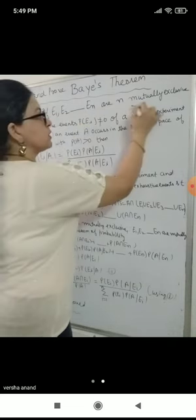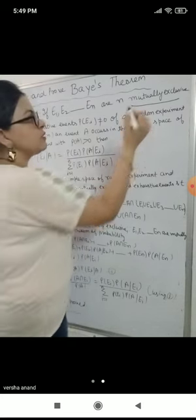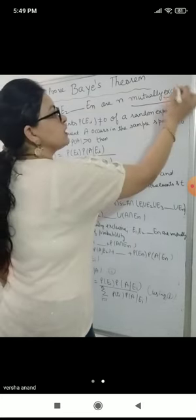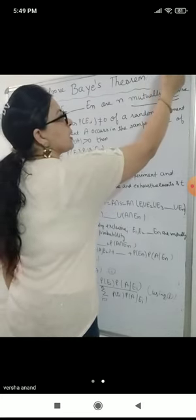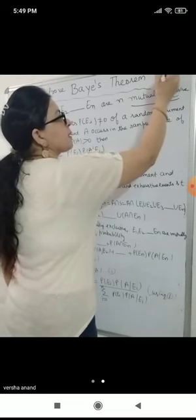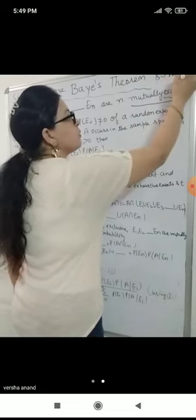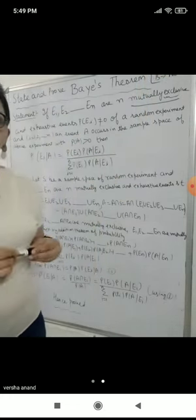If E1, E2, up to En are mutually exclusive. Now what is mutually exclusive? Mutually exclusive means that you have an A card and a B card — they are two probabilities. Both are different, so there are no common probabilities.